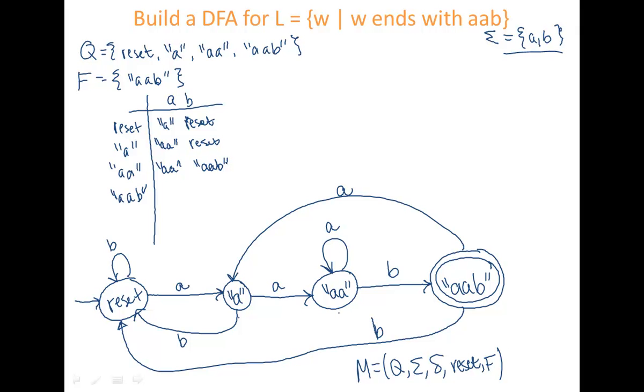And then if I was in AAB and I saw an A, I wanted to go back to state A. And if I saw a B, I wanted to go to reset. So that's my delta. And that's it. That's my machine M for L.